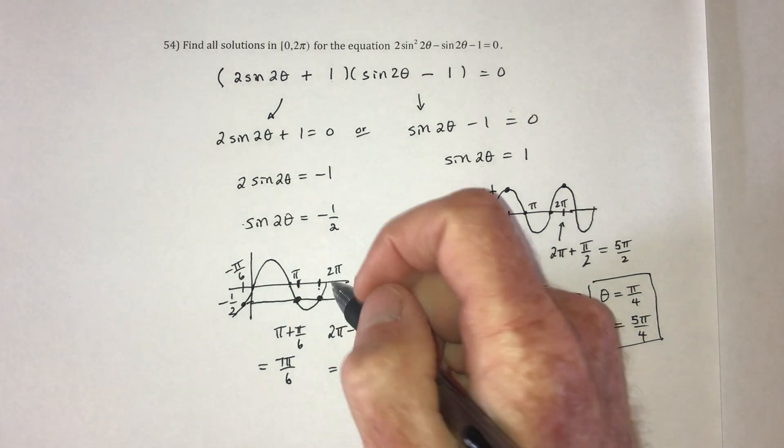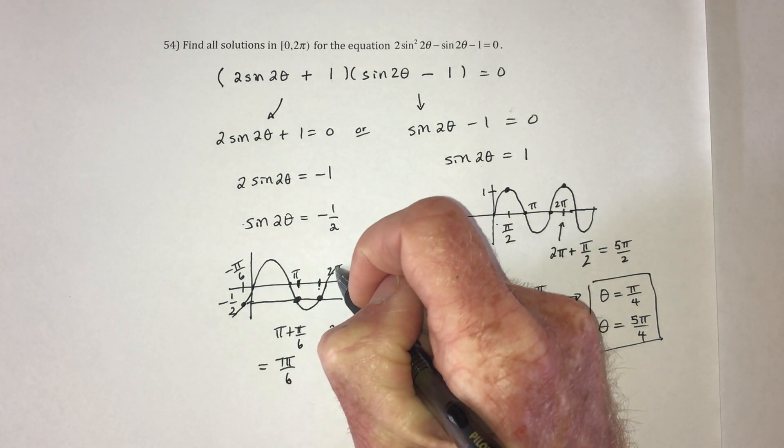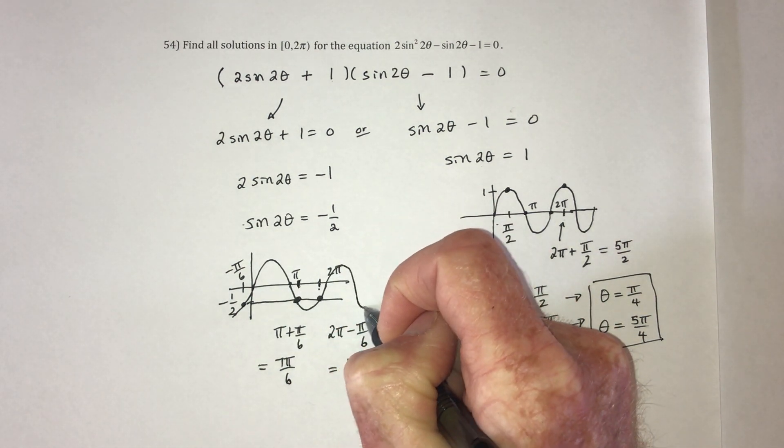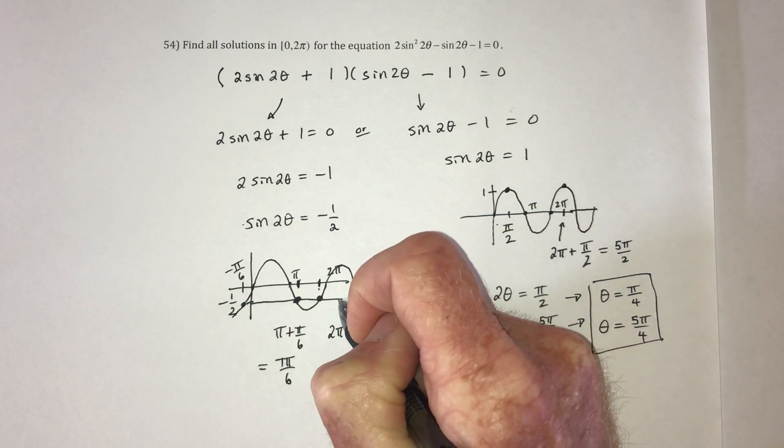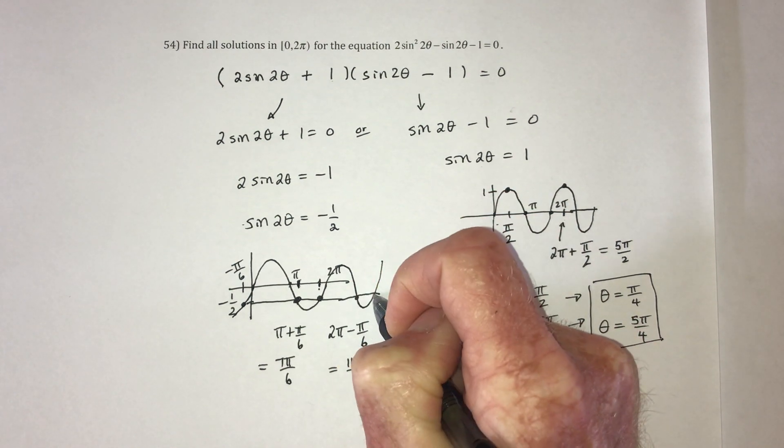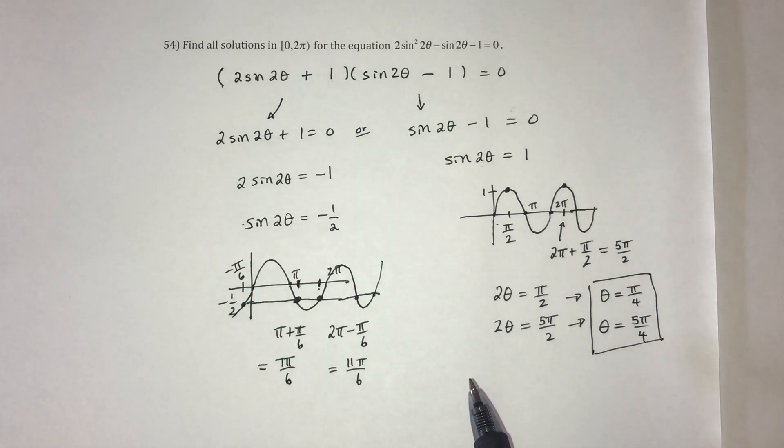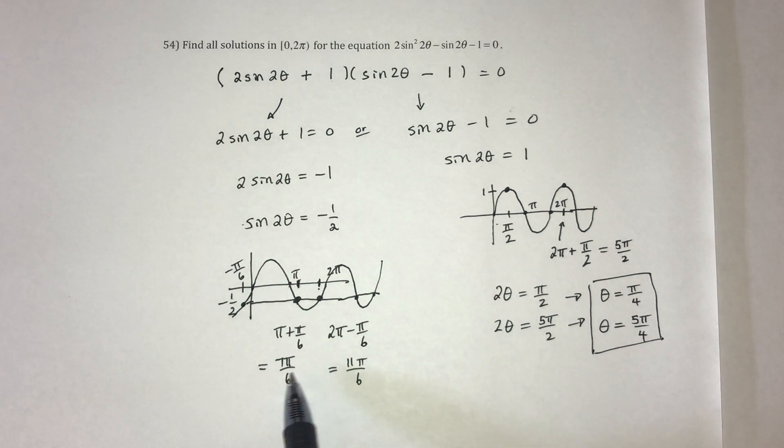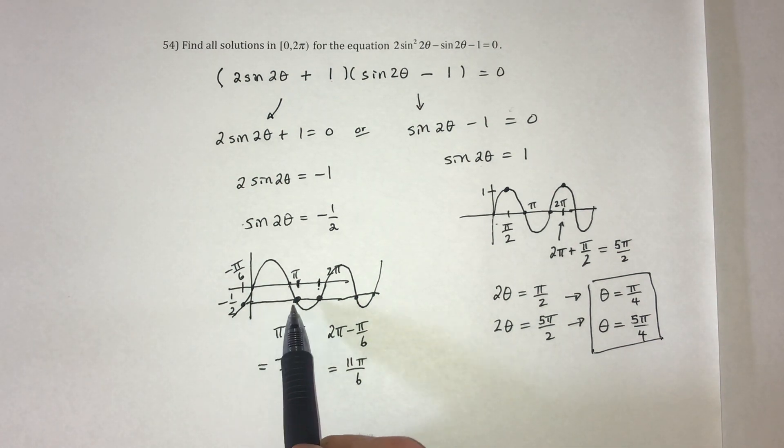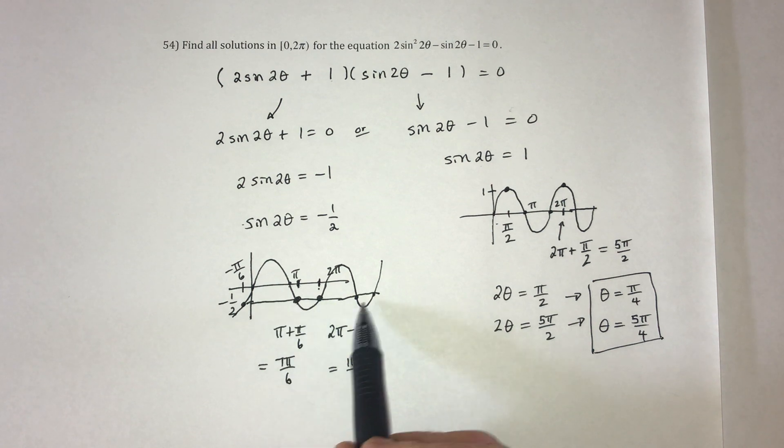Now, because of the 2 theta, there would actually be two more solutions if you follow the graph out. And you can continue this line. Or what you could do is take these two solutions, so take these two solutions, and if you add 2 pi, you'll get to these two solutions.